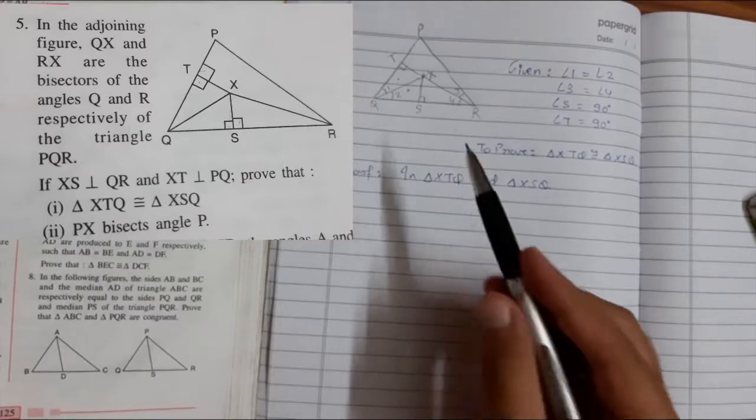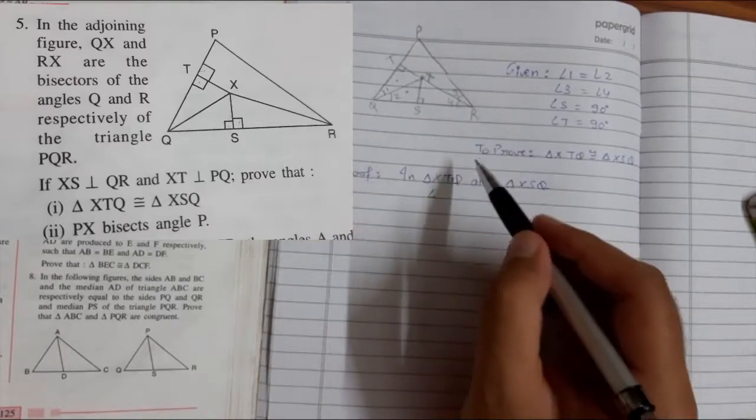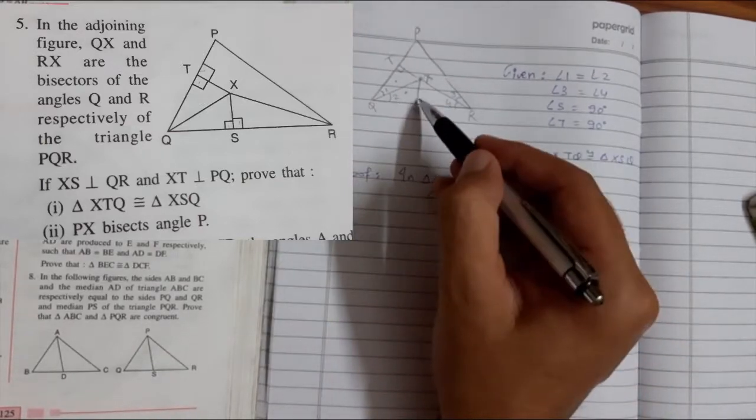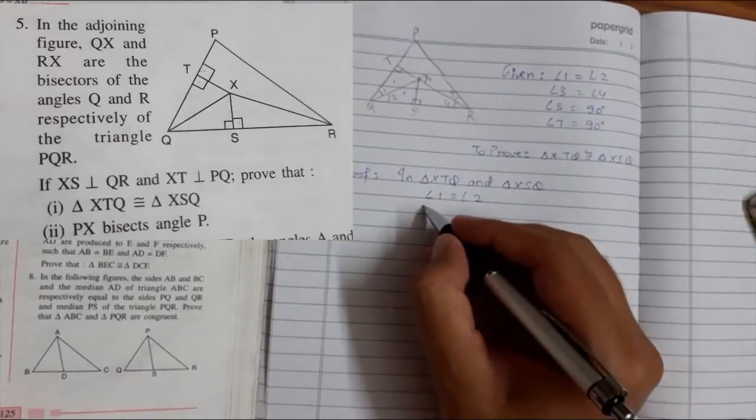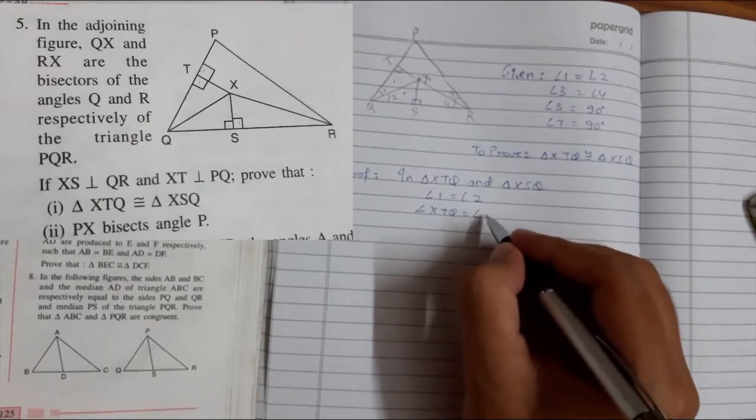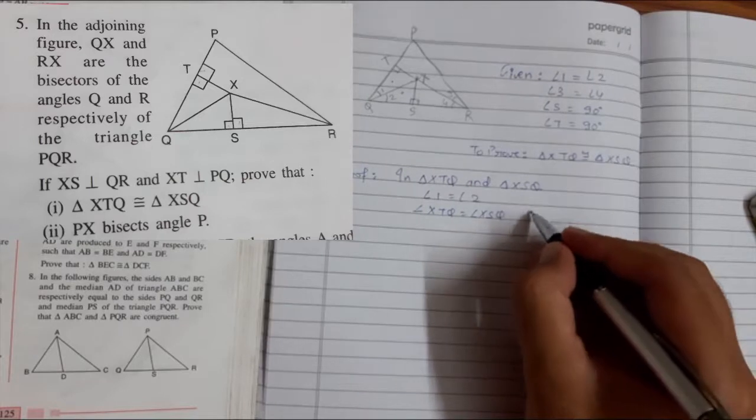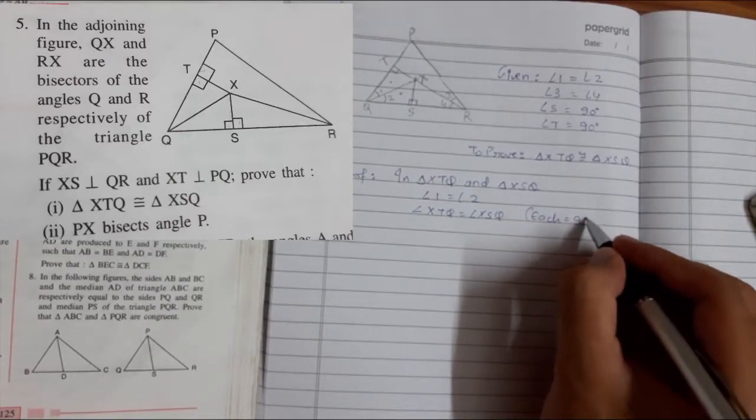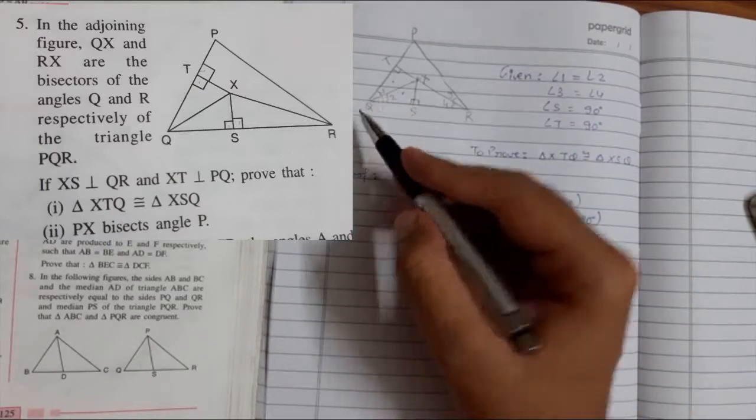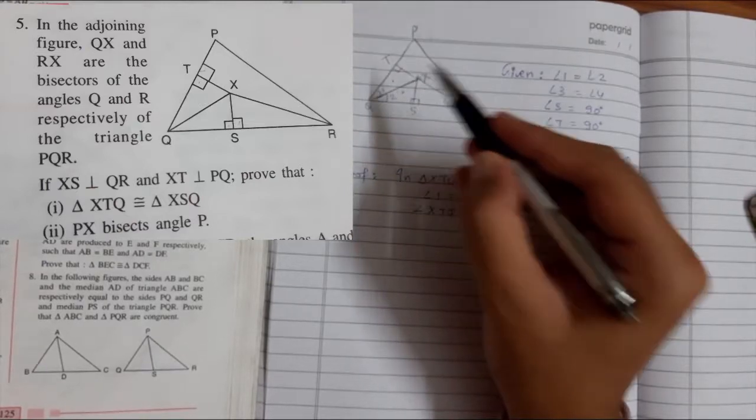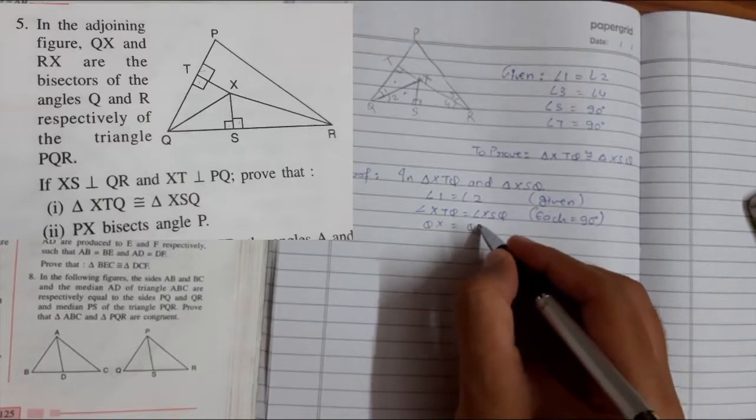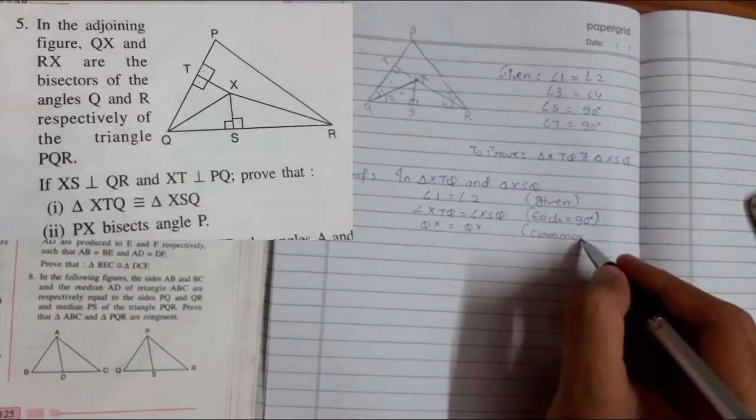First thing is given angle 1 equals angle 2. Second thing, this is 90, if this is 90 this is also 90. So angle XTQ equals angle XSQ. Since these two triangles are joining at this part, this part is common. So this will be also equal, QX equals QX, common.